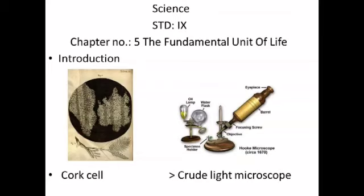How was the cell discovered? Robert Hooke was examining a dried section of the cork tree using a crude light microscope. In this analysis he observed multiple small chambers which he named the cell. The word cell is derived from a Latin word